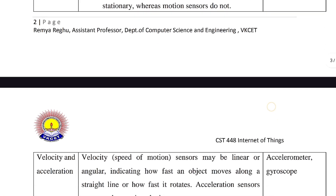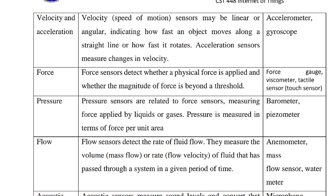Now let's talk about velocity and acceleration. Velocity is the speed of motion. Velocity sensors are linear — indicating how fast an object moves along a straight line — and angular, indicating how fast an object is rotating. Acceleration sensors measure the change in velocity. Examples include the accelerometer and gyroscope.